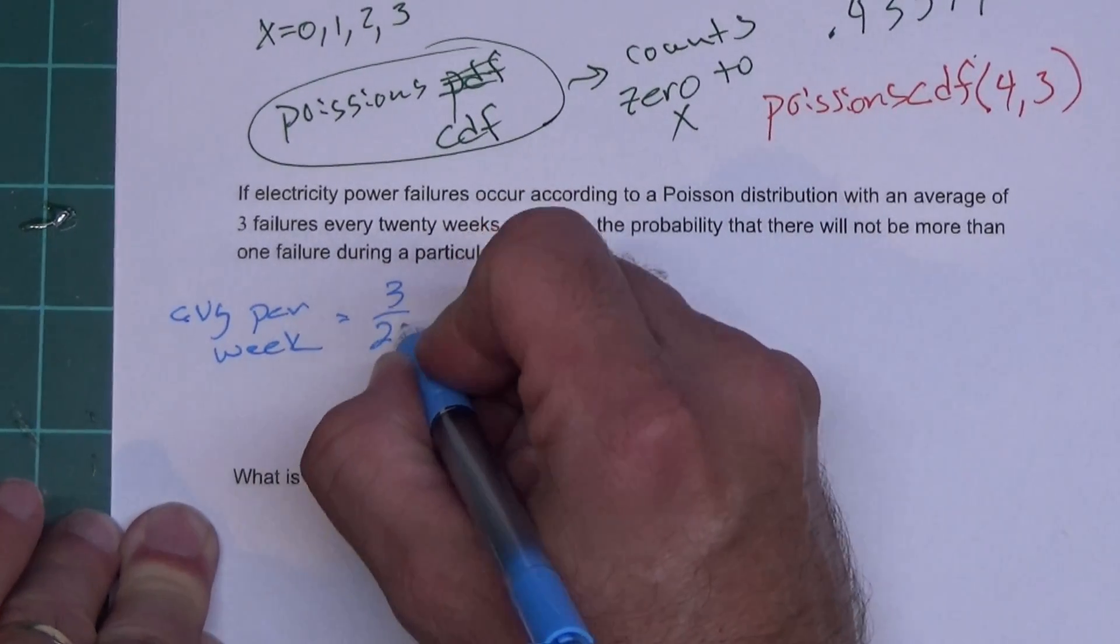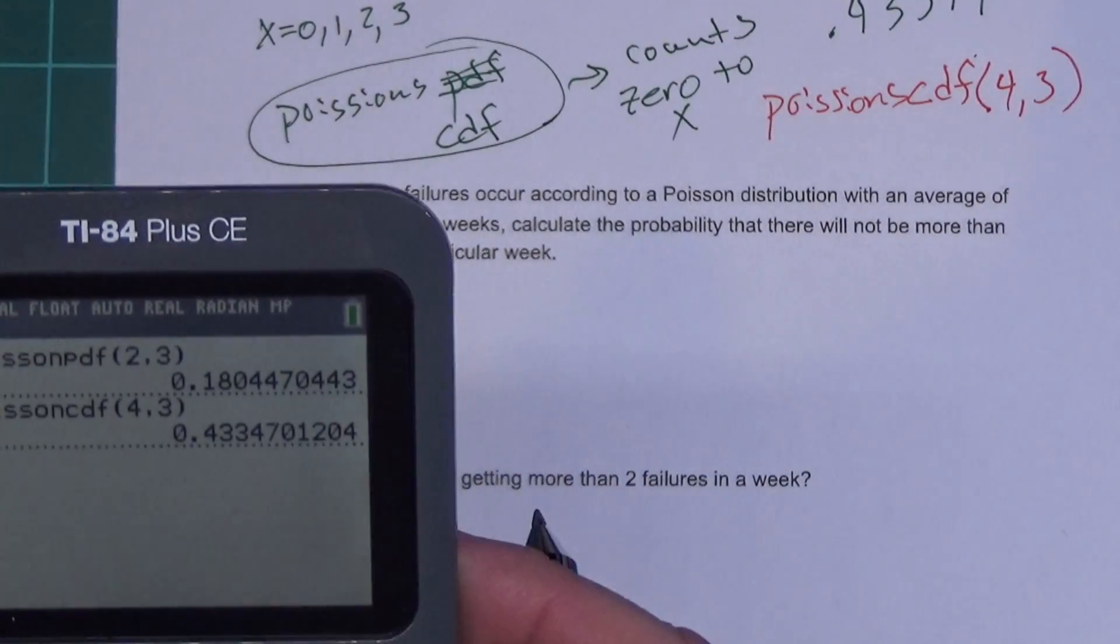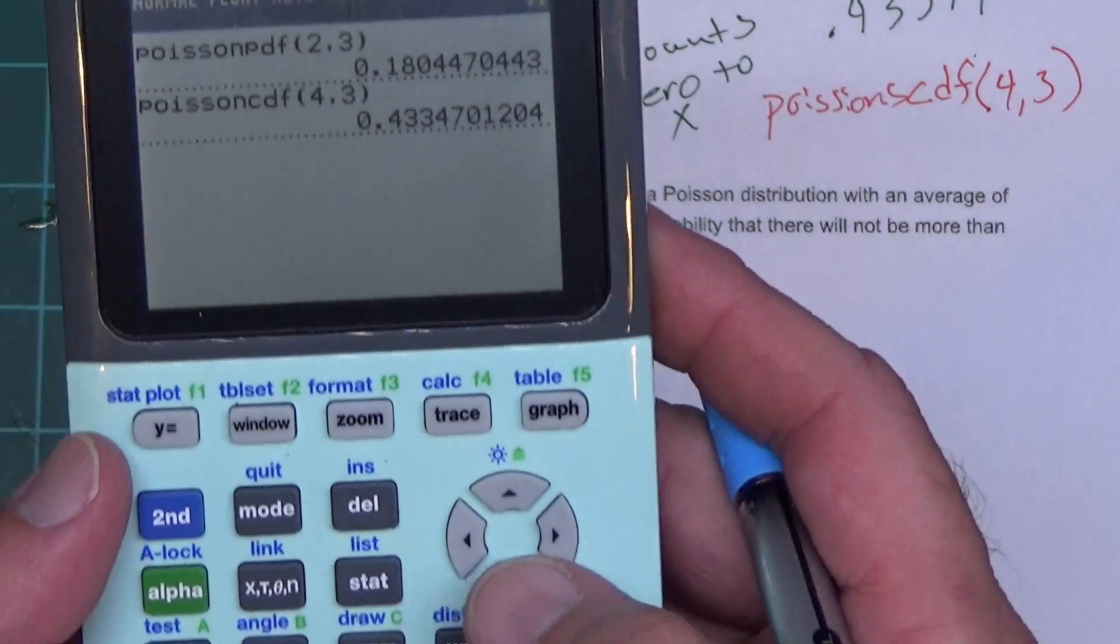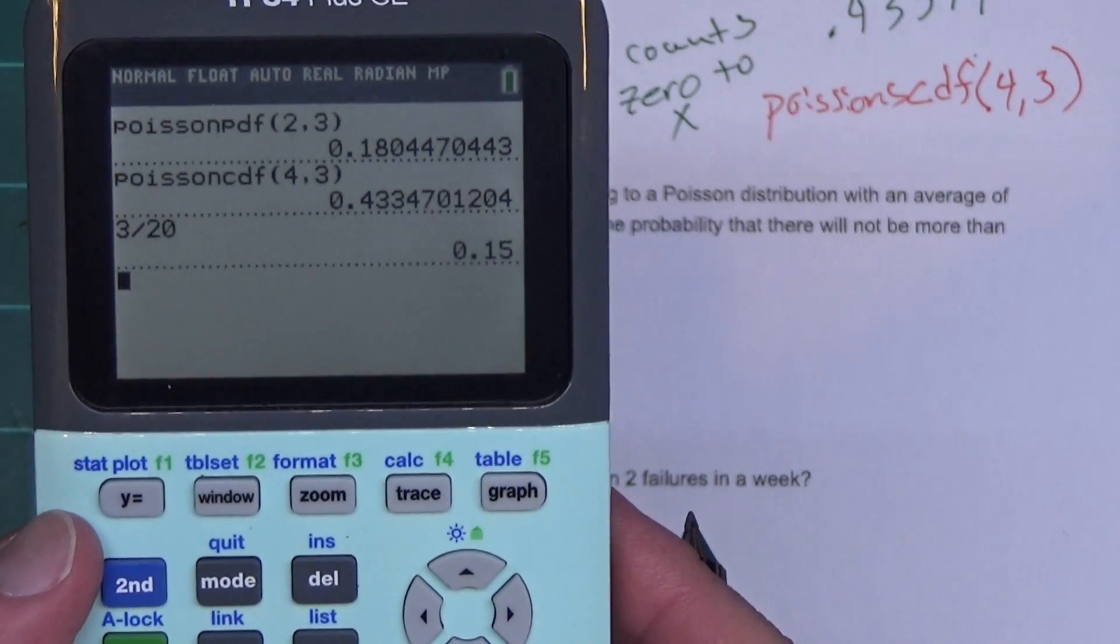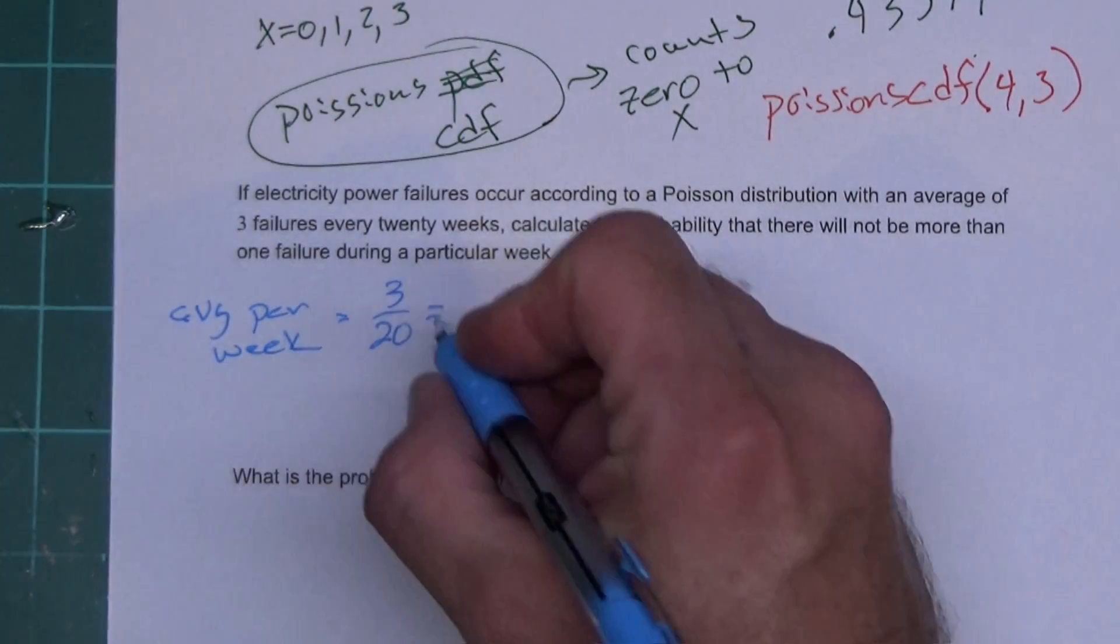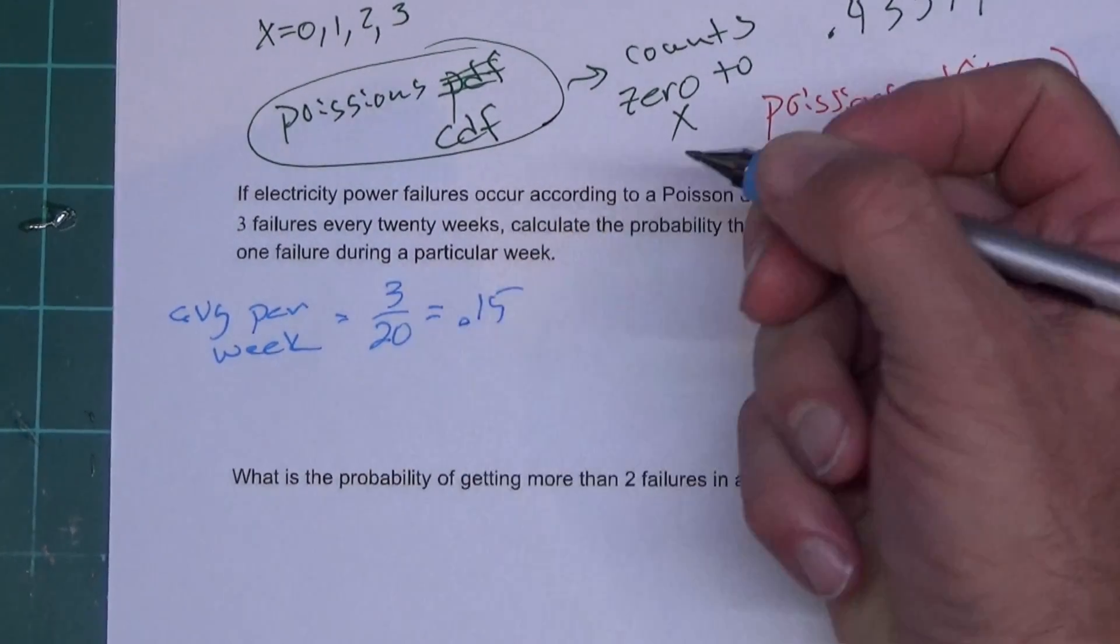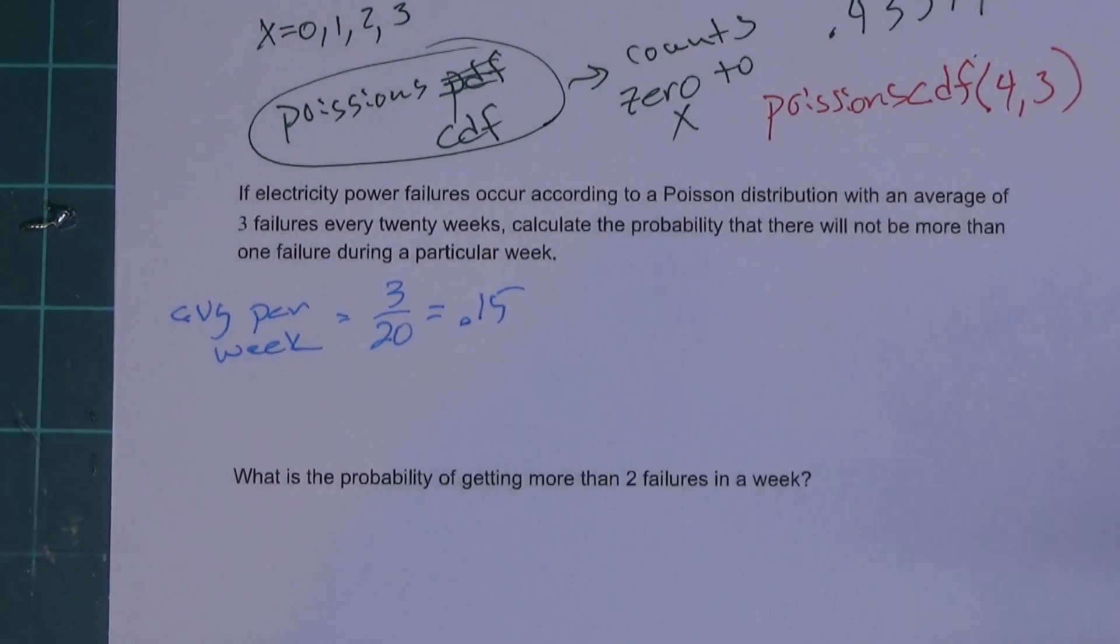So my average per week will be the three divided by 20. So I'm going to calculate that with the calculator. I'm just doing three divided by 20 here. Let's find out what that is as a decimal - it's 0.15. So my average in Poisson's is 0.15.